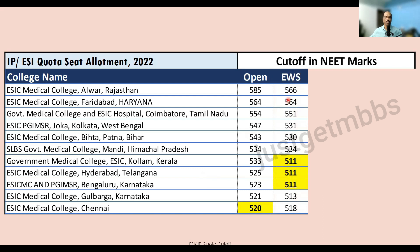For the EWS quota, the highest cutoff was again ESI Medical College Rajasthan, which closed at 566. Second place was ESI Faridabad at 564. The lowest cutoff was shared by three colleges — ESI Kollam, ESI Hyderabad, and ESI Bangalore — all closing at 511 marks for the EWS category.